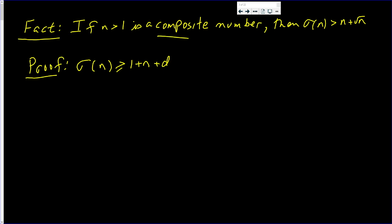And there might be more than just d. There's always 1 and n, and there might be more divisors. And I'll even say where d is: d is between 1 and n, and d is a divisor of n.